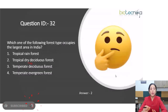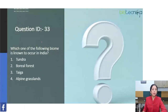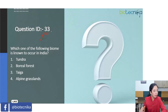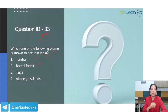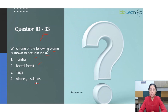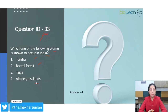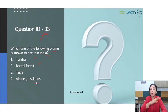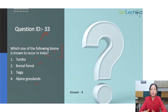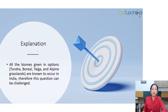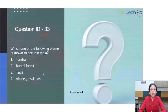Now let us move to question ID 33. This question asks which one of the following biomes is known to occur in India. Four options are given: tundra, boreal forest, taiga, and alpine grassland. As per the CSIR key, option 4 is the right answer, but this question could be challenged because all these types of biomes have been found to occur in India. The question is not very clear, so we can definitely challenge the CSIR key for clarity over the correct option given.